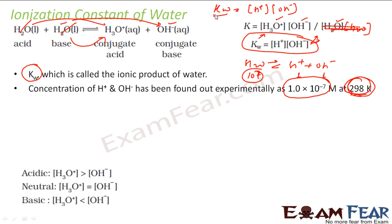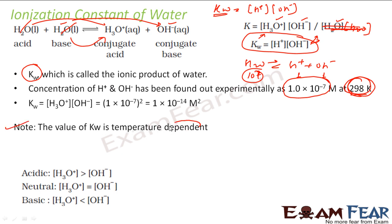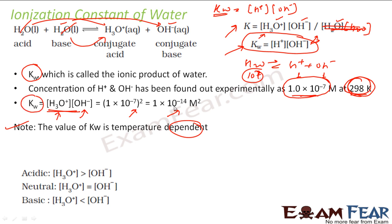KW is temperature dependent — just like the equilibrium constants we discussed earlier, this is also an equilibrium constant but with a special name. KW represents [H+][OH-]. Since both are 10^-7 mol/L at 298 K, the value of KW becomes 10^-14 mol²/L² (molarity squared).